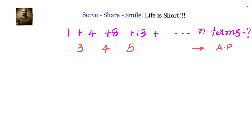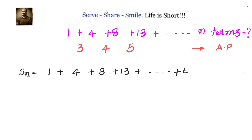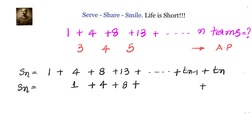Let us now find the sum of n terms of this series. First, write down: Sn equals 1 plus 4 plus 8 plus 13 plus ... up to the (n-1)th term and the nth term. Then write down the same Sn again, but this time shift it to the right by 1, so we have 1 plus 4 plus 8 plus ... plus t(n-1) plus tn.